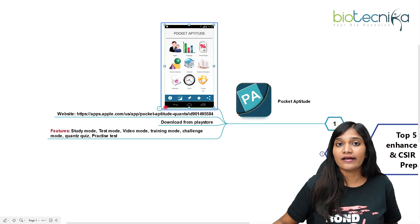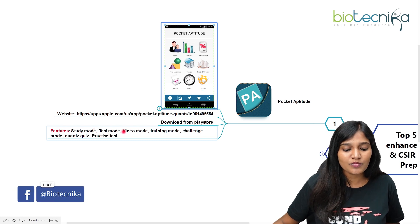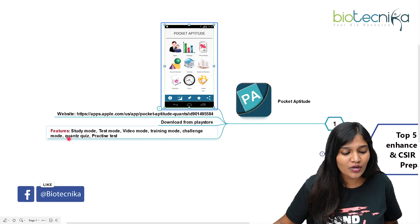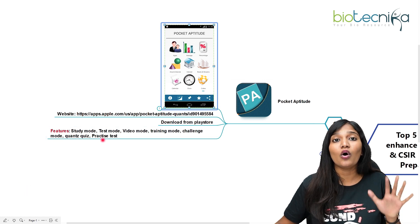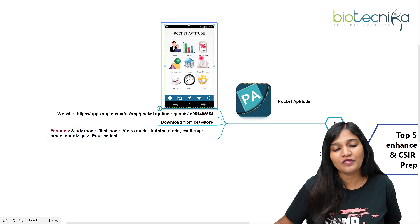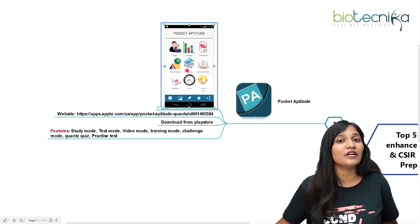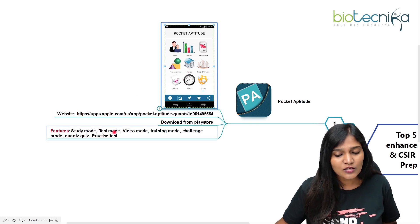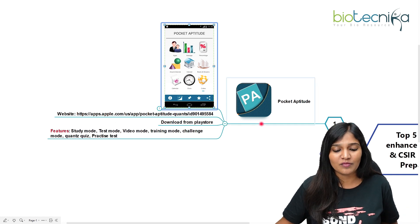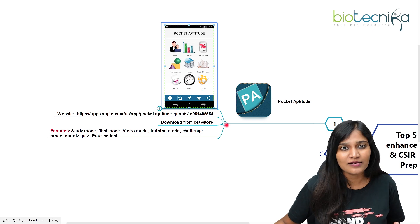Pocket Aptitude has a study mode, test mode, video mode, training mode, challenge mode, and a quants quiz. There are a lot of practice tests very specifically for each of these topics. If you click on profit and loss, you will find a lot of questions on that topic, where you can keep practicing and find out what the answers are going to be. This is one of the easiest ways to make your aptitude skills a bit faster.